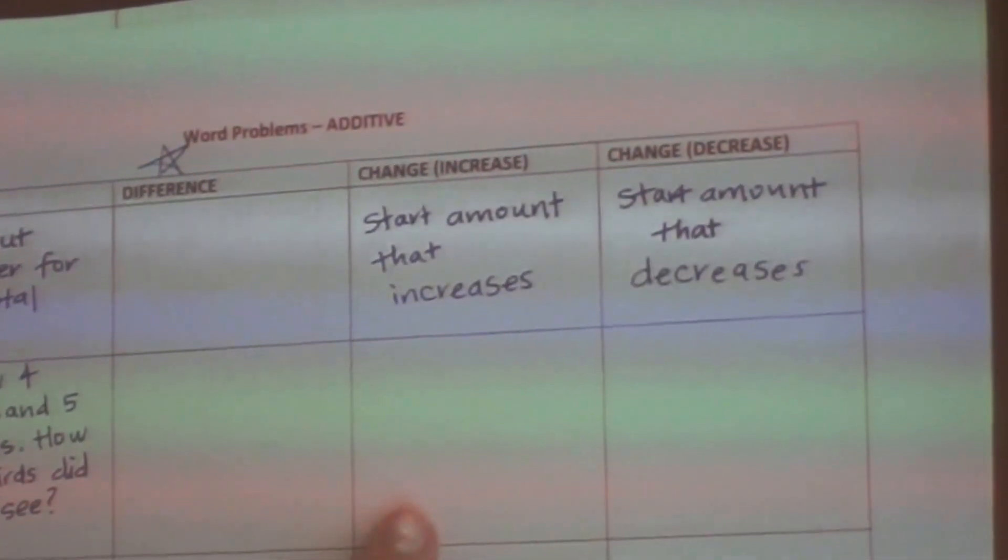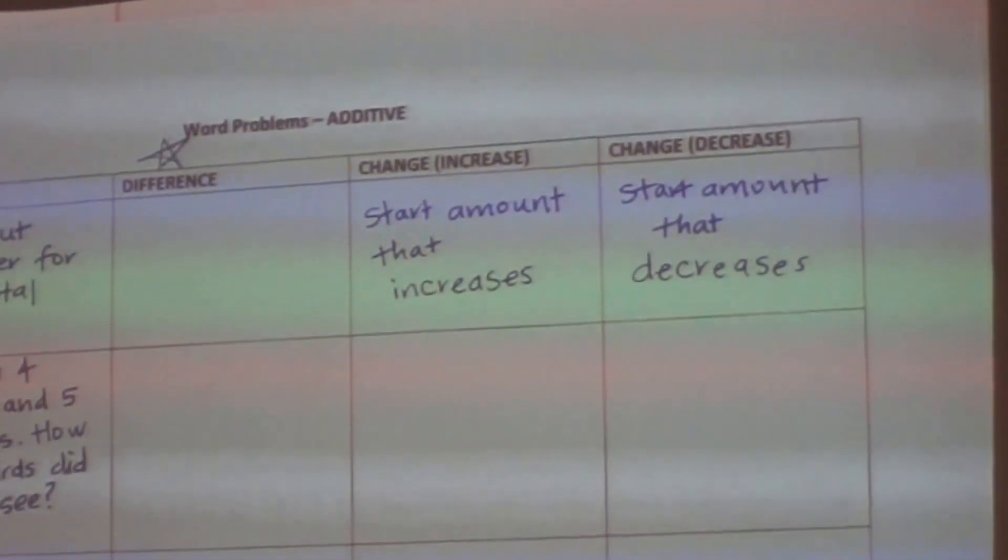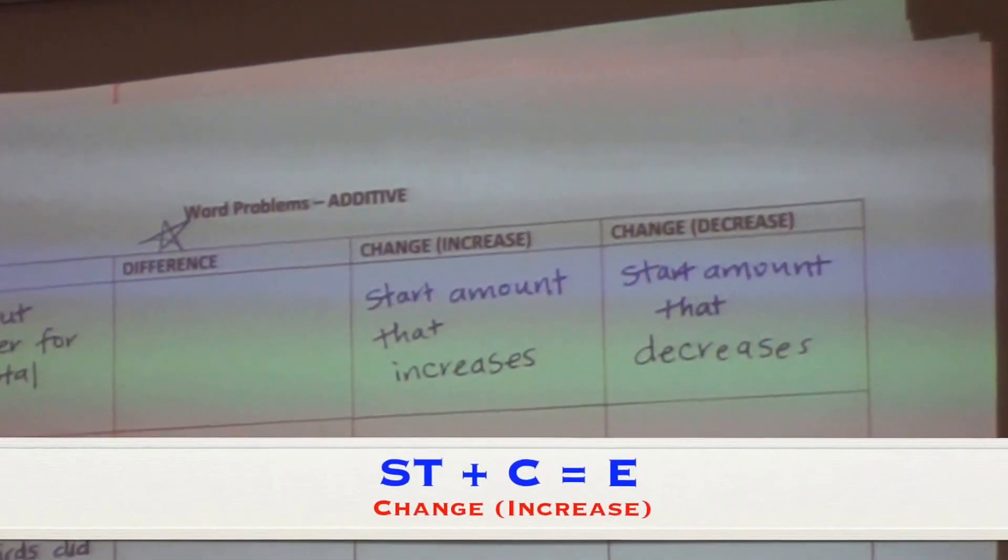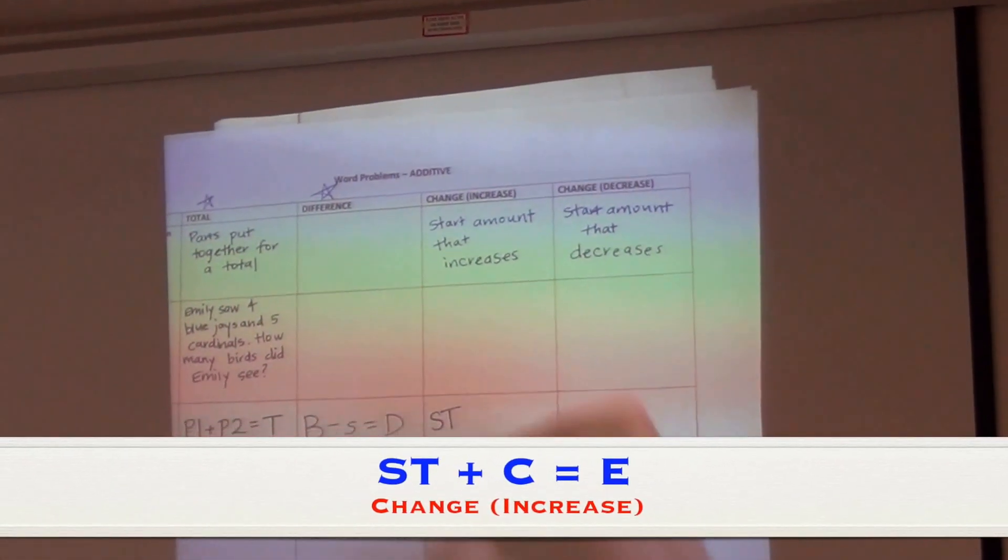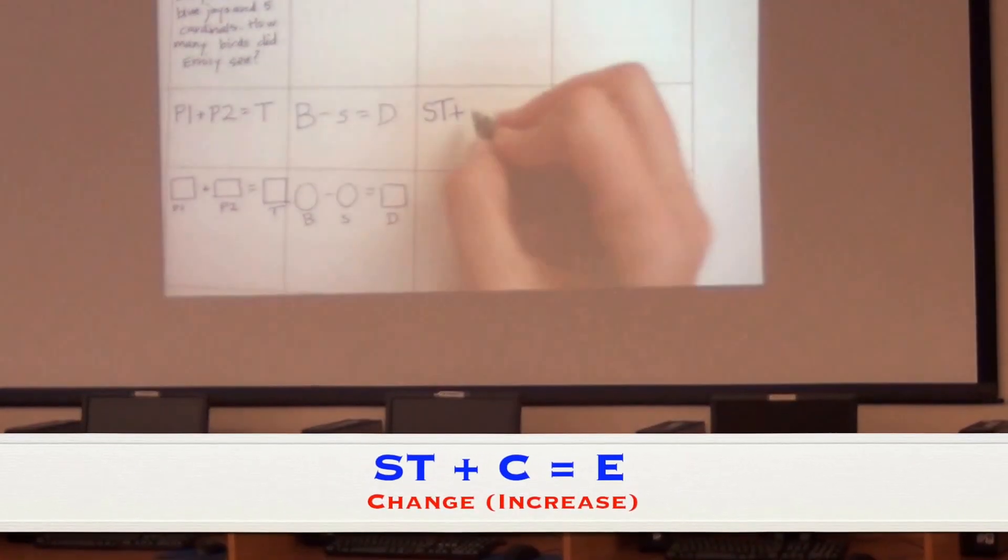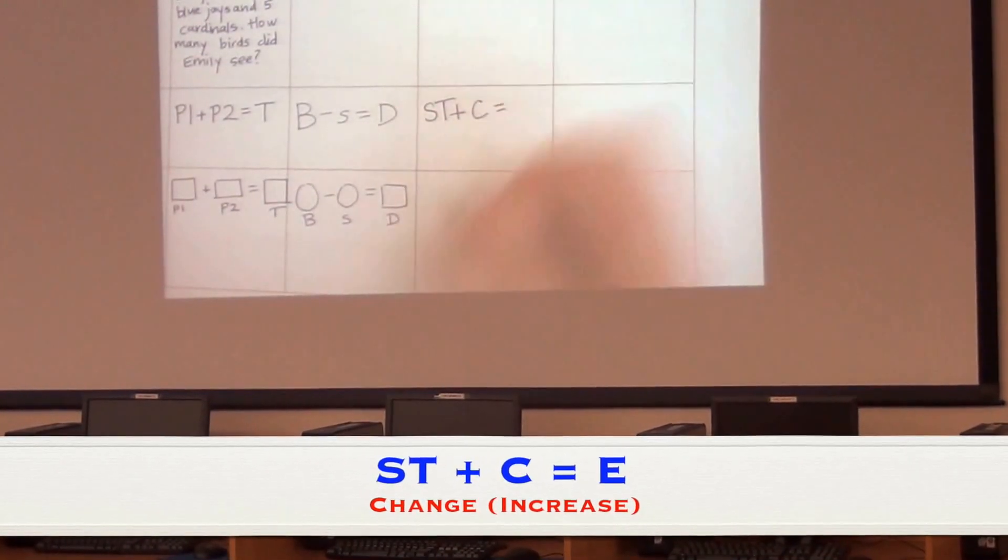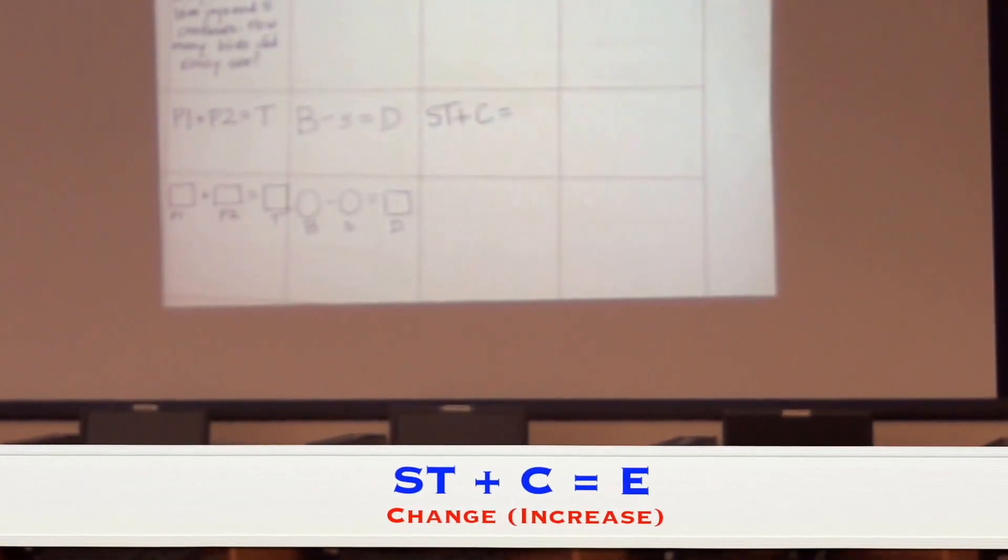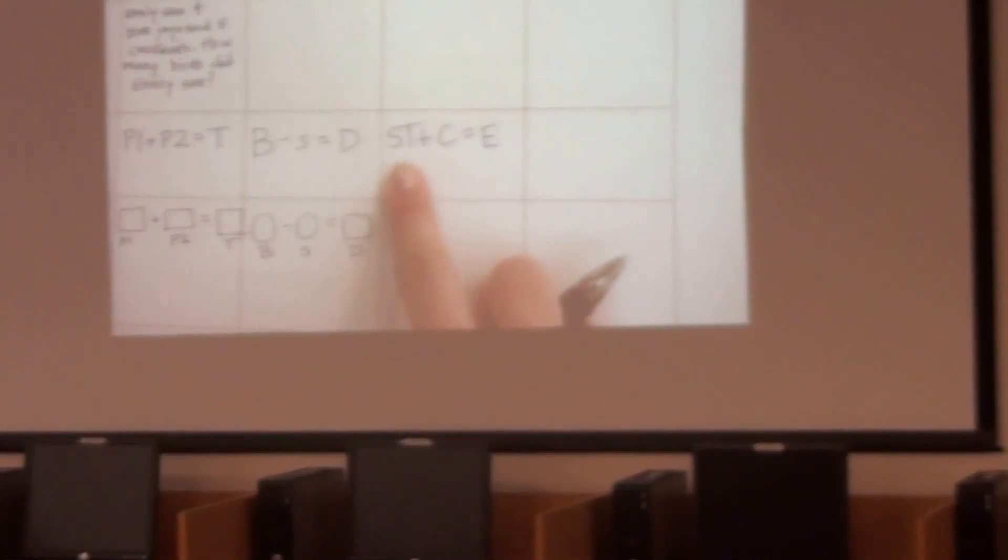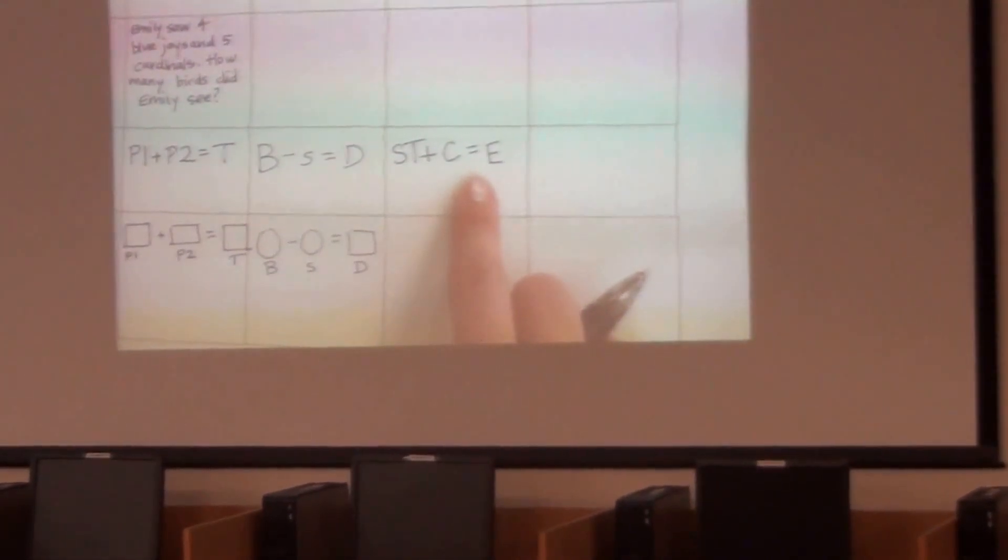My equation that I use for change problems is I have a start, so I write ST. And for an increase, I'm going to use a plus sign to show the increase. And I'm going to increase a C, which is the change, and that equals a new end amount. So I'll use E for end amount. The start plus the change equals the end amount.